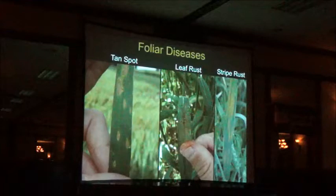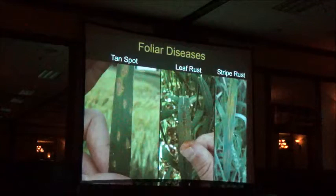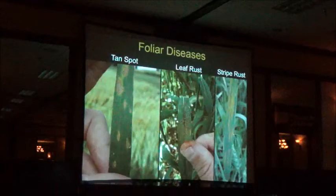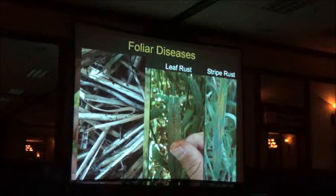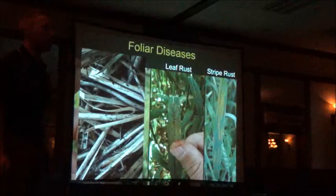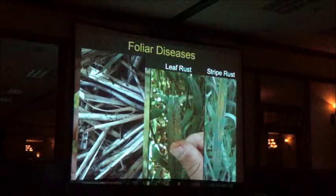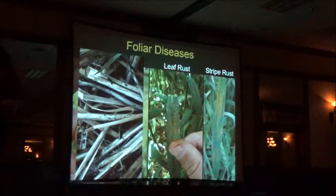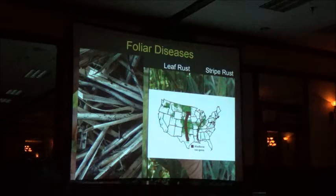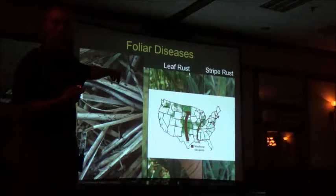We also have foliar diseases. Tan spot has been the most common wheat disease in North Dakota for the last 15 years. It's a residue-borne disease, so wheat-on-wheat and no-till ground gives you a better chance of dealing with it on an every-year basis. We also have rust diseases—leaf rust and stripe rust. They don't overwinter in this state; they blow in from the south. Leaf rust appears as brown-red oval lesions; stripe rust, also known as yellow rust, appears in linear yellow stripes. They're dependent on spores blowing up from neighboring states to the south.